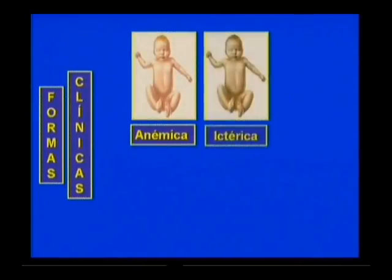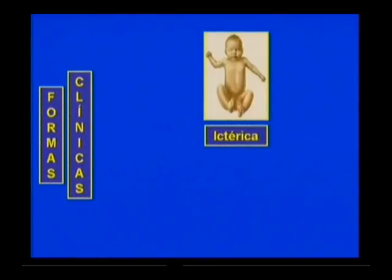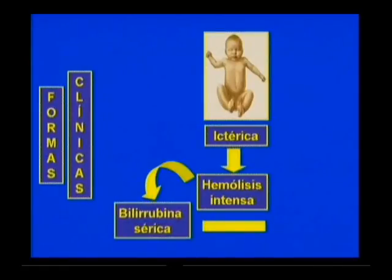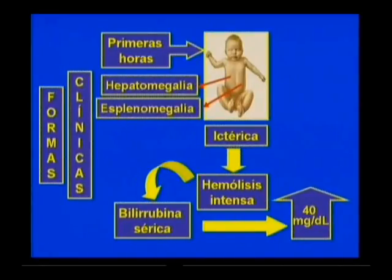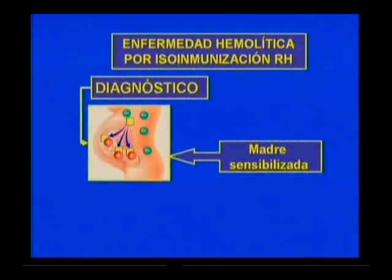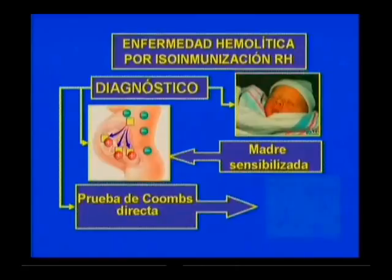Pueden existir tres formas clínicas: la anémica, la forma ictérica y la hidropeçía fetal. La más frecuente es la forma ictérica, y en su variedad más grave hay una hemólisis intensa. Los valores de bilirrubina sérica pueden incrementarse hasta 40 mg/dL y la ictericia aparece en las primeras horas de vida, acompañándose de hepatoesplenomegalia en la mayoría de los recién nacidos. El diagnóstico se realiza teniendo en cuenta el antecedente de madre sensibilizada junto a las manifestaciones clínicas del neonato, y se confirma porque la prueba de Coombs directa es positiva.